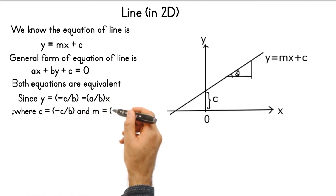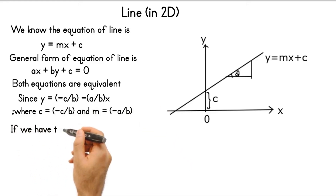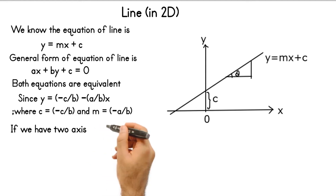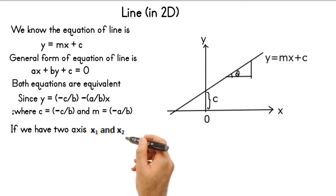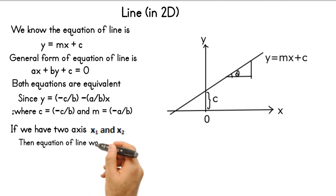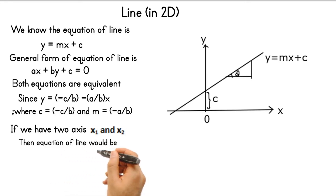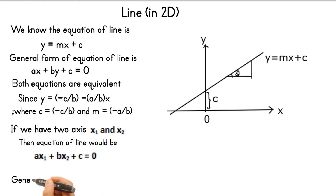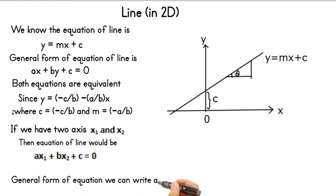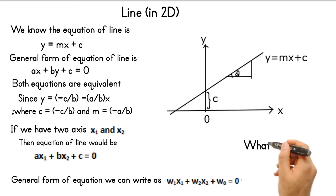You can prove it because by just rewriting the equation I can write y = -c/b - (a/b)x. So here c is -c/b and m is -a/b. Ax + by + c = 0 is called the general form of a line. Here if our axes are x1 and x2, the general form can be written as ax1 + bx2 + c = 0. Since in linear algebra we generalize concepts to higher dimensions, we write the general form as w1*x1 + w2*x2 + w0 = 0, which is the equation of a line in 2D.